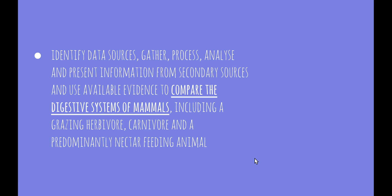Welcome to the next video in the patterns in nature topic. This video is looking at the dot point: identify data sources, gather, process, analyse and present information from secondary sources and use available evidence to compare the digestive system of mammals, including a grazing herbivore, a carnivore and a predominantly nectar feeding animal.